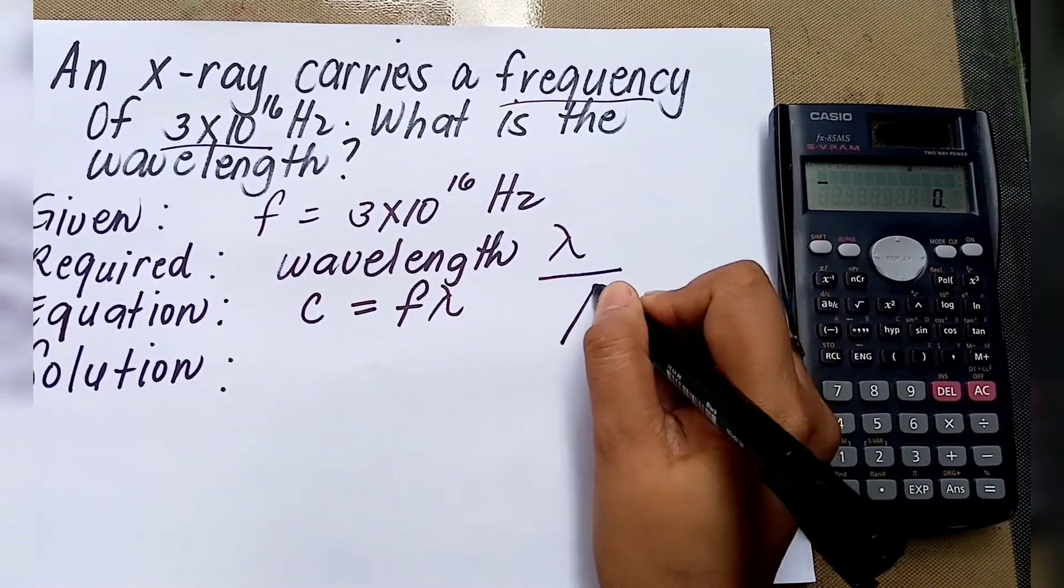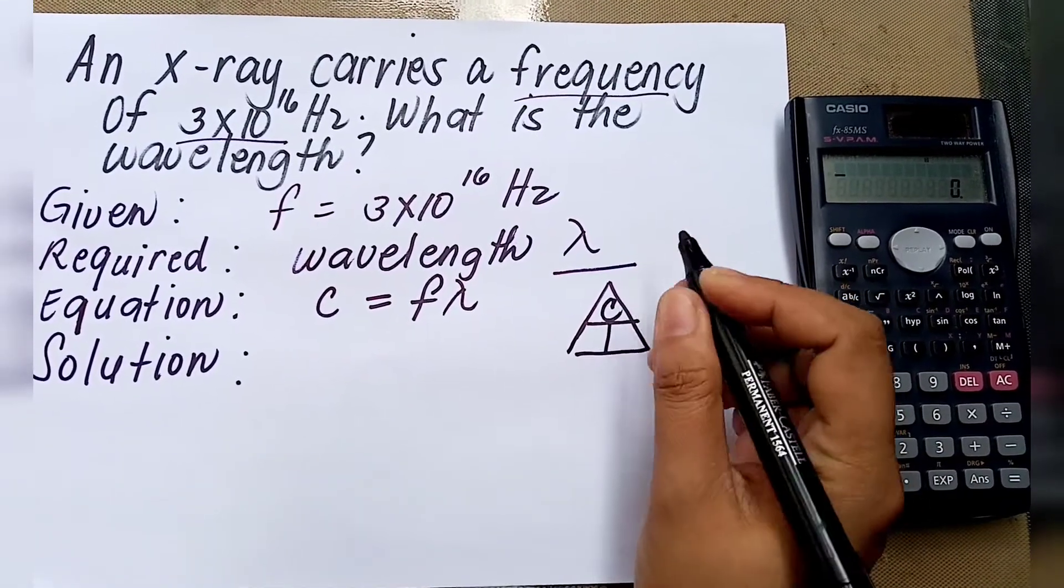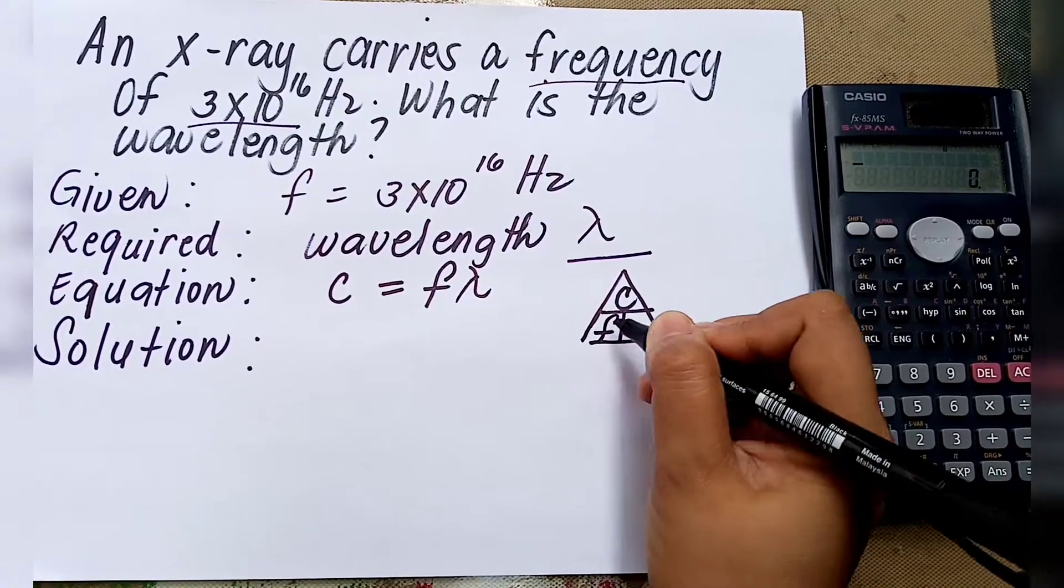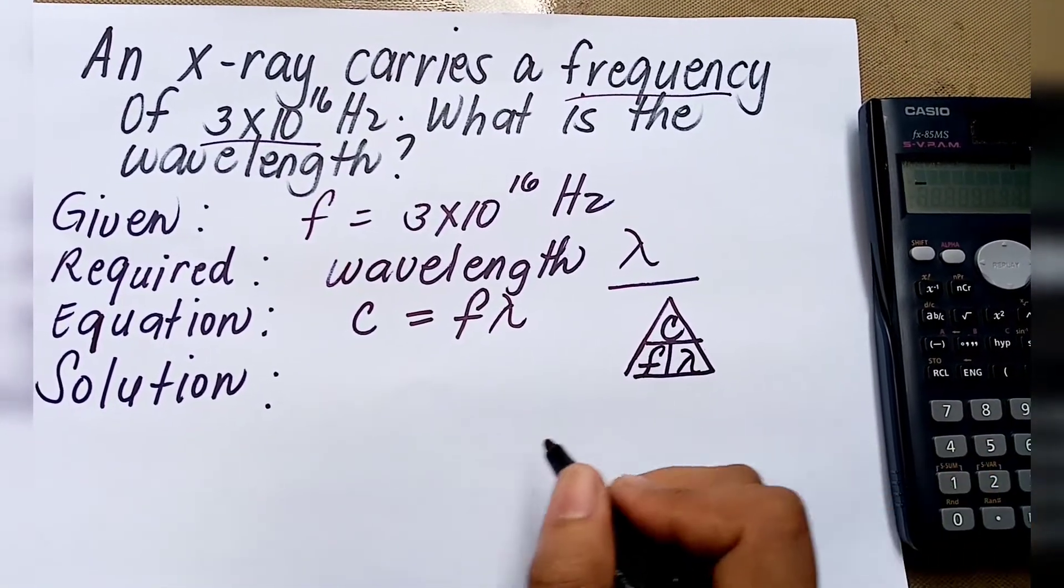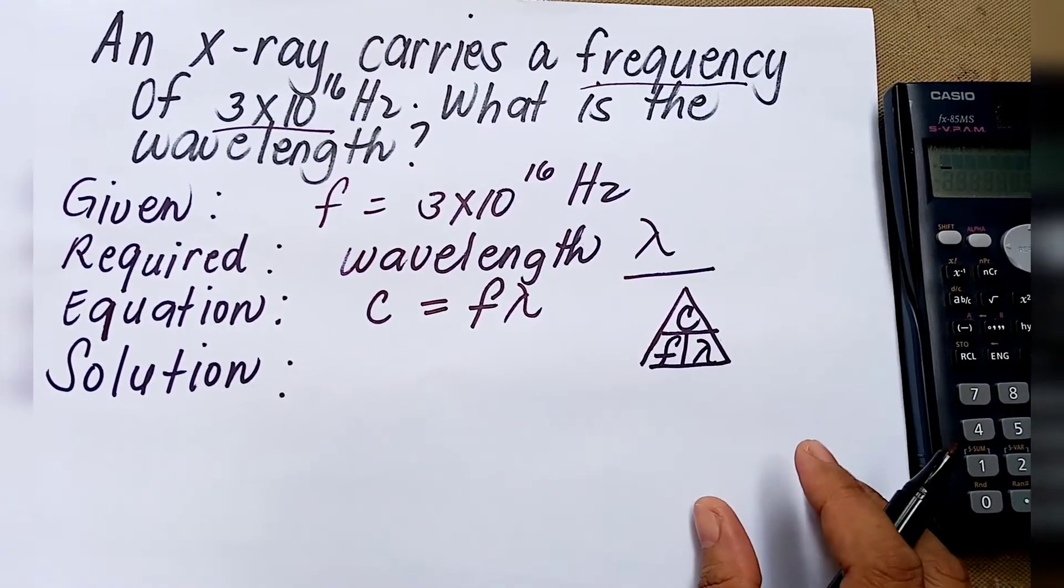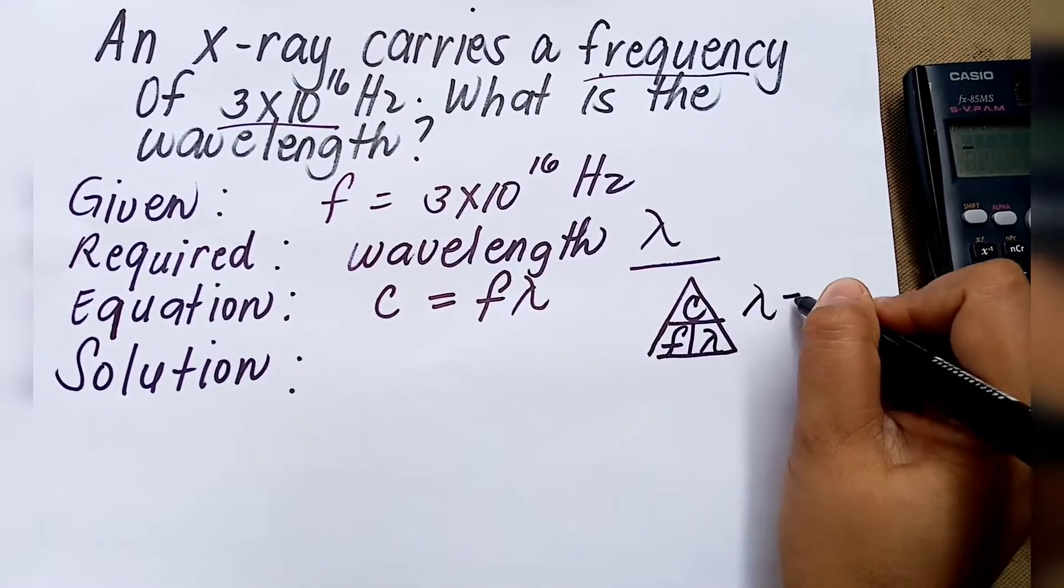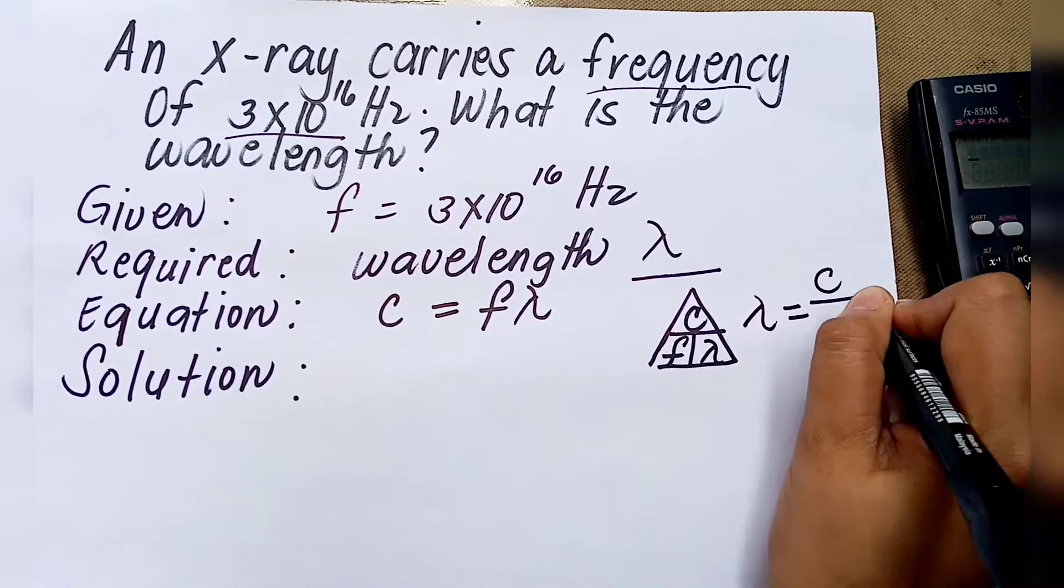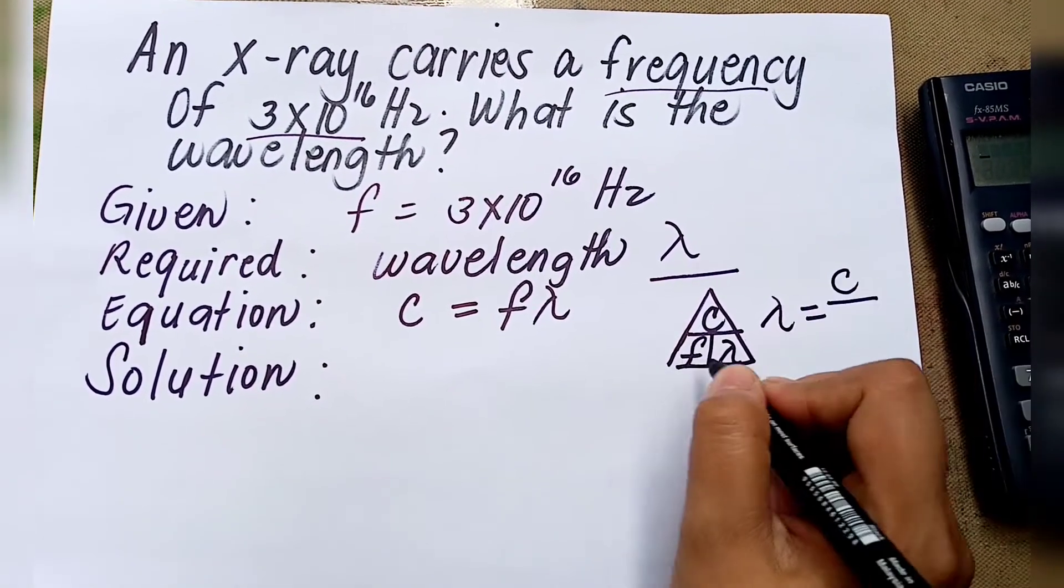We consider the speed of the EM wave, frequency, and wavelength. The formula to be used, since we are looking for wavelength, is wavelength equals speed of the EM wave divided by frequency.